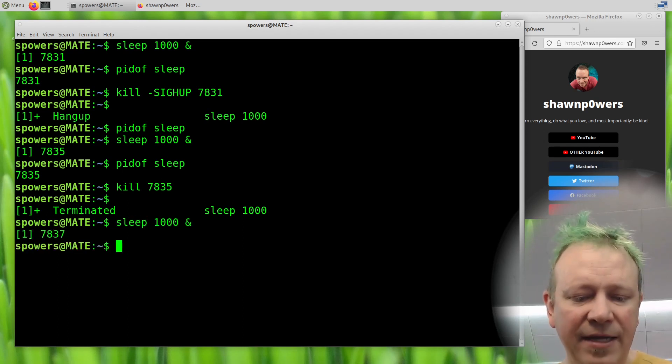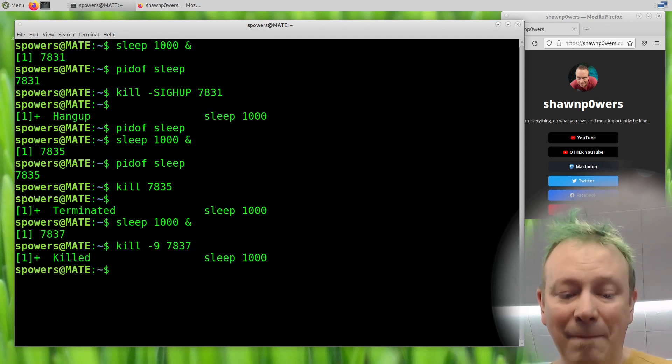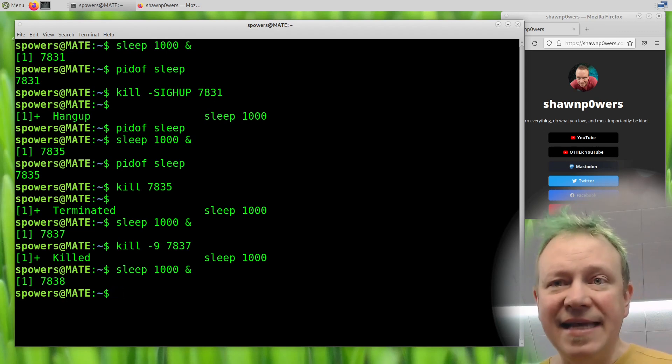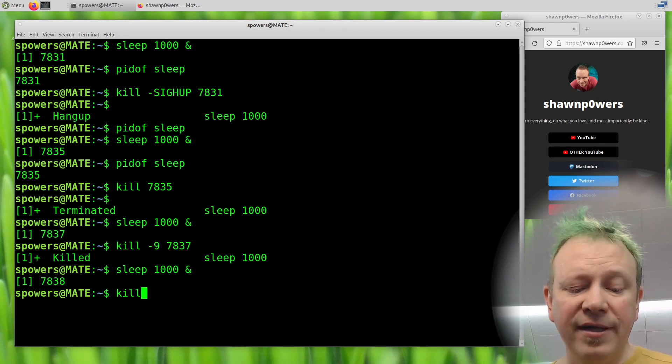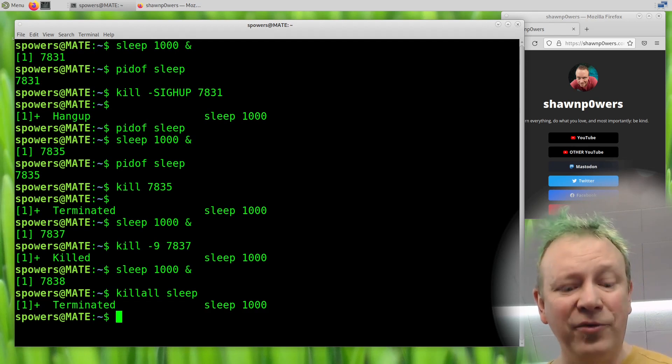Same thing. Sleep 1000. In the background, I'm not going to do pidof again. If we do kill dash nine of 7837, it killed it using SIGKILL. So all those signals are going to kill the sleep command. But we have to know the PID if we're going to do that. Now one more time, sleep 1000 in the background. Let's say I don't know what that process ID is. Well, if I do killall sleep, it terminated it. Because again, it found that it had that sleep running, based on the name sleep, it looked up the PID and it killed it. And sure enough, it used the default SIGTERM because it said it was terminated.